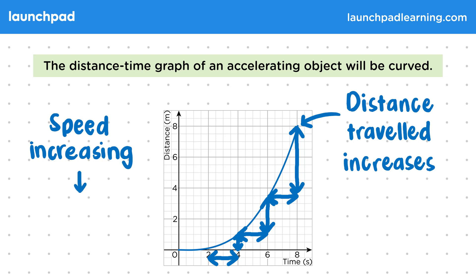In other words, there must be an acceleration happening. We can also make this conclusion by saying that the gradient is increasing, and since the gradient is equal to speed, then the speed must be increasing.